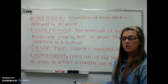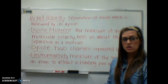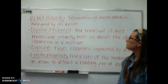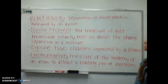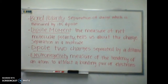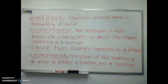First I'm going to read some very basic definitions that you need to know. The first is bond polarity, which is a separation of charge measured by its dipole. Dipole moment is the measure of net molecular polarity, which tells us about the charge separation in a molecule. A dipole is two charges separated by a distance, and electronegativity is a measure of the tendency of an atom to attract a bonding pair of electrons.